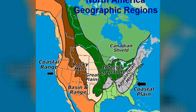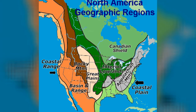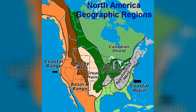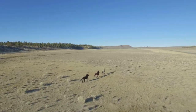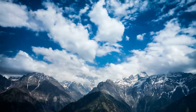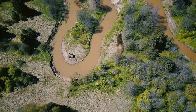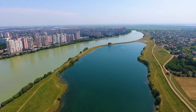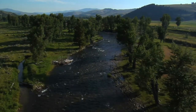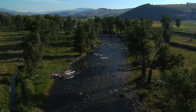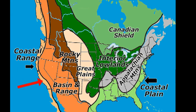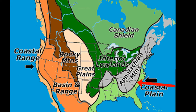There are eight geographic regions in the United States. Some regions are flat, some are mountainous, some are dry, and some regions have a lot of rivers. Here are the eight United States geographic regions you'll need to know: Coastal Range, Basin and Range, Rocky Mountains, Great Plains, Interior Lowlands, Canadian Shield, Appalachian Highlands, and the Coastal Plain.